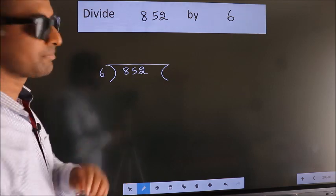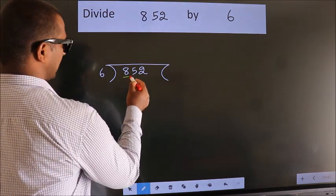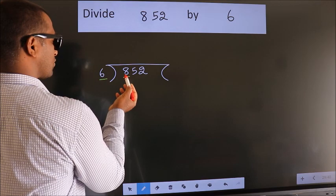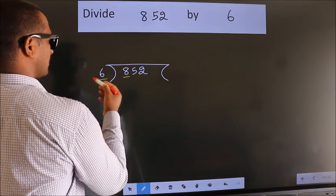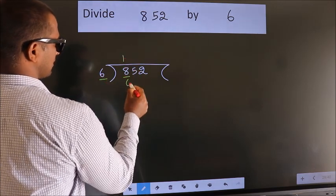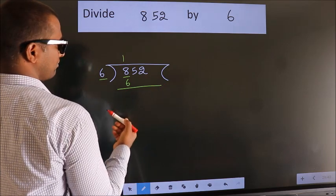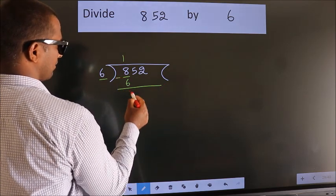Next. Here we have 8, here 6. A number close to 8 in 6 table is 6 once 6. Now we should subtract. We get 2.